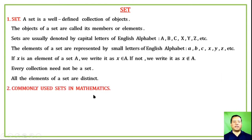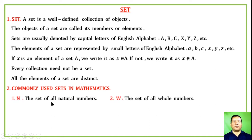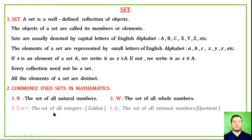Commonly used sets in mathematics: The set of natural numbers is denoted by capital N (first letter of 'natural'). The set of whole numbers is denoted by capital W (first letter of 'whole'). The set of integers is denoted by Z or I.